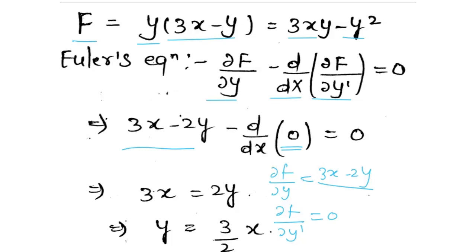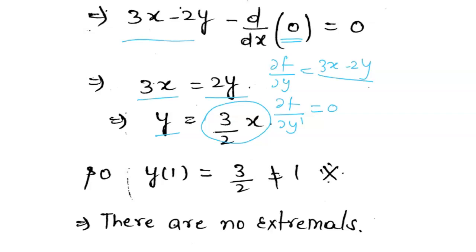So del f by del y has the value 3x minus 2y. Substituting this, and the differentiation with respect to y dash is zero, so we have zero. The differentiation of zero is zero. So from here, 3x minus 2y equals 0, which we can write as 3x equals 2y. So y equals 3x/2.